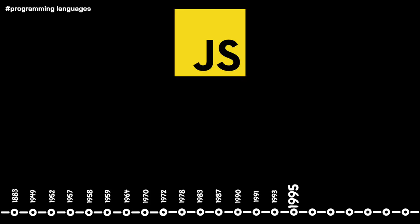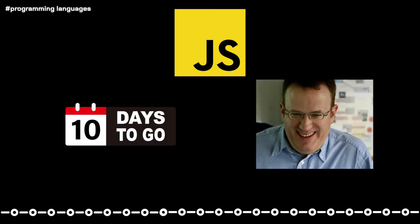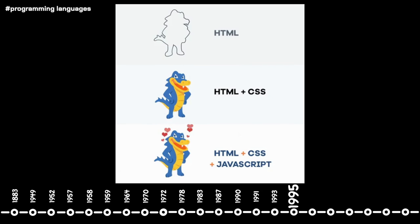Lastly in our 1995 programming language montage, JavaScript comes to the table. Developed in a mere 10 days by Brendan Eich, JavaScript focuses on enhancing web browser interactions. JavaScript is often just-in-time compiled and is considered a core technology alongside HTML and CSS for the three big W's of the web.